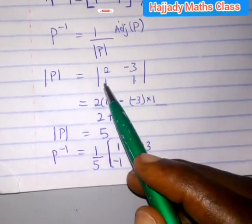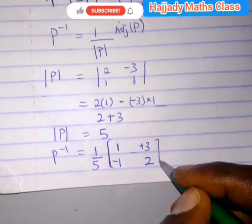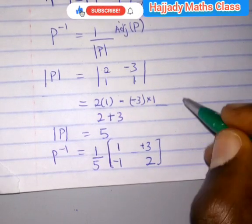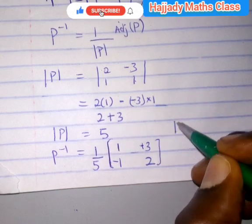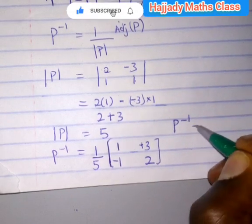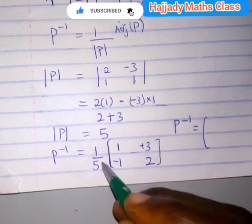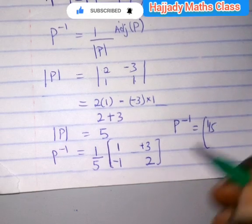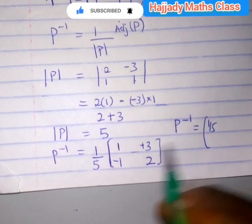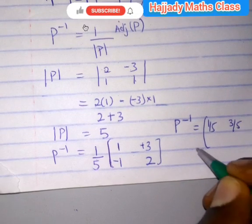And finally, we can say that our P inverse is, taking this in, 1 over 5. This is a scalar multiplying a matrix. So we have 3 over 5, minus 1 over 5, and lastly we have 2 over 5.